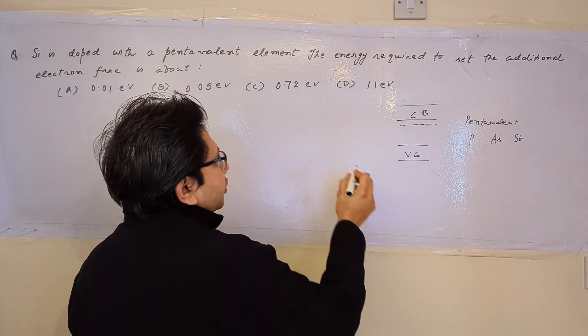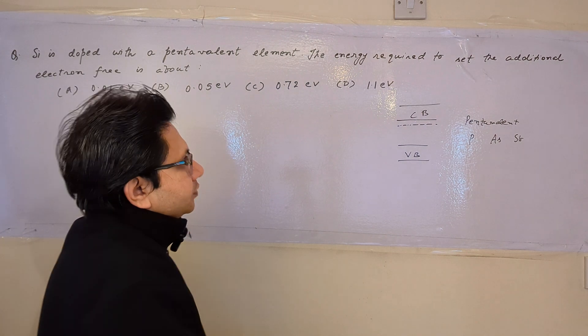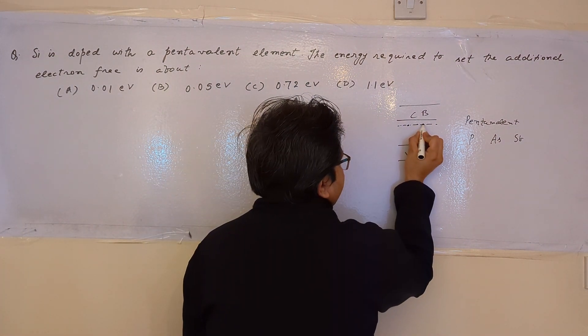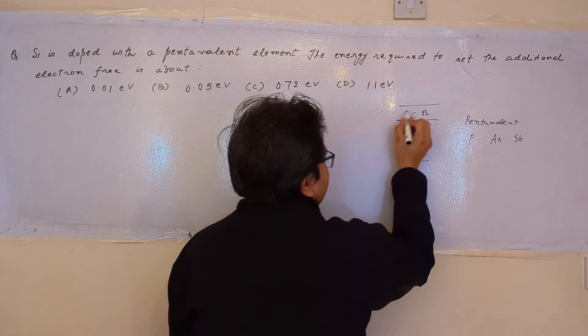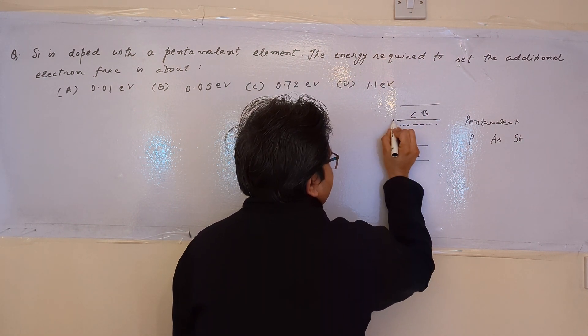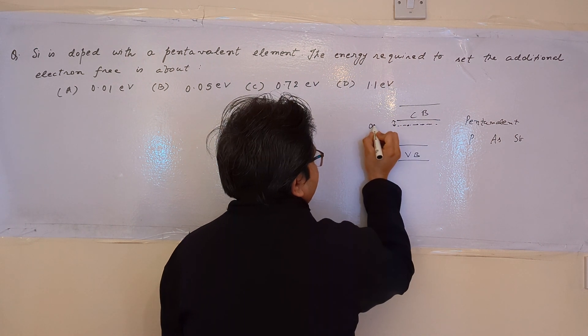In the case of pentavalent impurity addition, that is the n-type elements, the electron resides below the lower energy or the lowest energy level of the covalent bond. So there is a band gap.